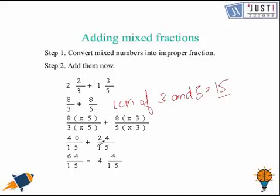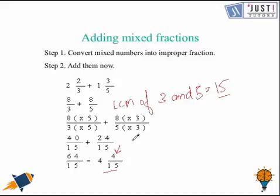Now we add 40 and 24, which is 64, giving us 64 over 15. We can further convert this into a mixed number, which is 4 and 4 over 15. Make sure the fraction part when converting to a mixed number is a proper fraction.